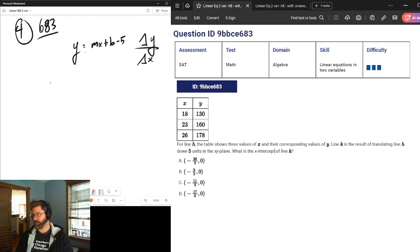Okay. So, to find the slope, we do the change in y. That's 30. 130 to 160 is a change of 30. And the change in x, 18 to 23, is 5. So, our slope, 30 divided by 5, is 6. So, we've got y equals 6x plus b minus 5 because we're translating down 5 units. That's why we have that minus 5 there.